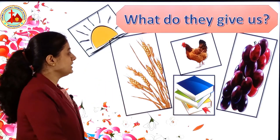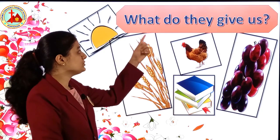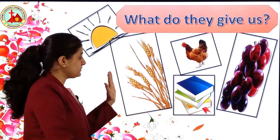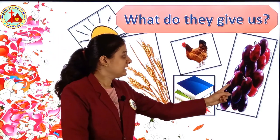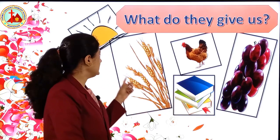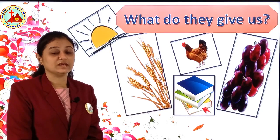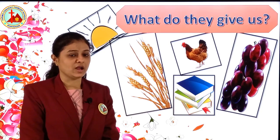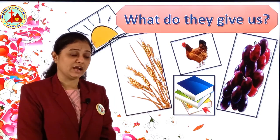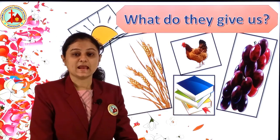In this lesson children, we are going to learn what do they give us. You see some of the pictures here? This is a picture of a hen, grapes, books, wheat, sun. In this lesson you will be given few pictures and you all have to identify what do they give us. Like for example, hen — what does hen give us? Hen gives us eggs.